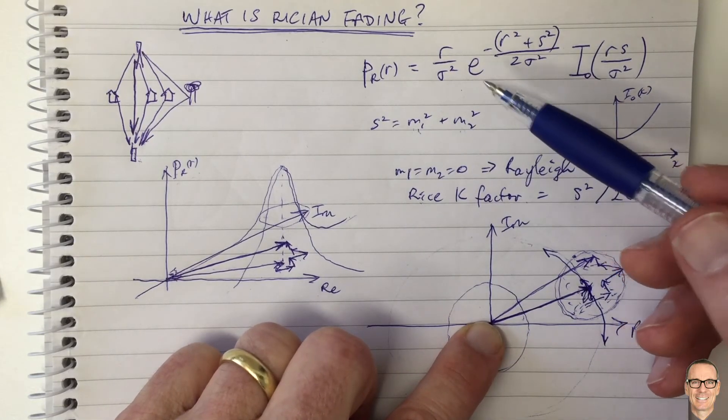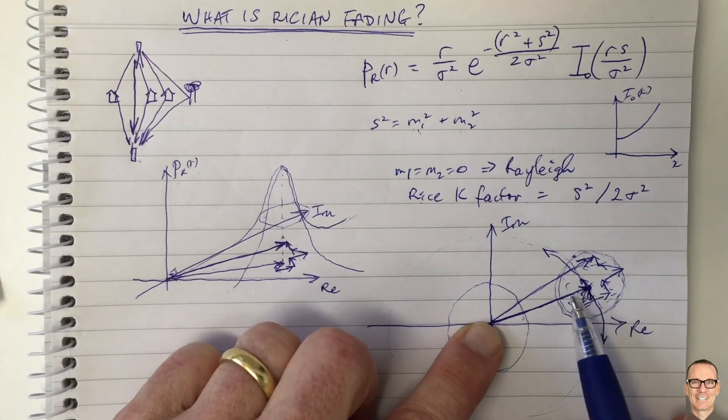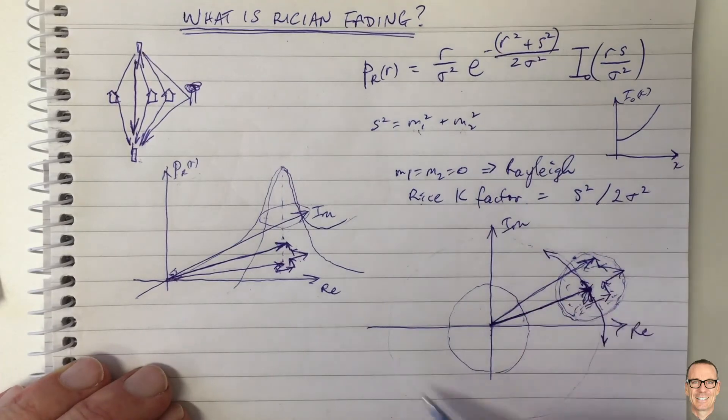between Rician and Rayleigh. It's really the dominant path and the effect that that dominant path has on the PDF of your amplitude, but also the phase distribution.